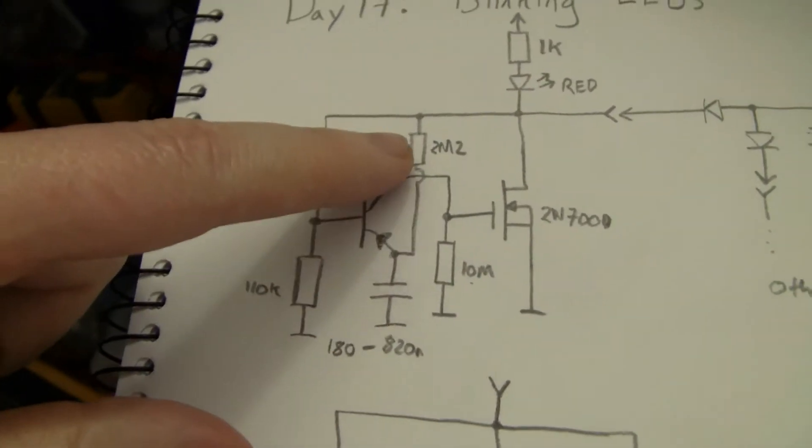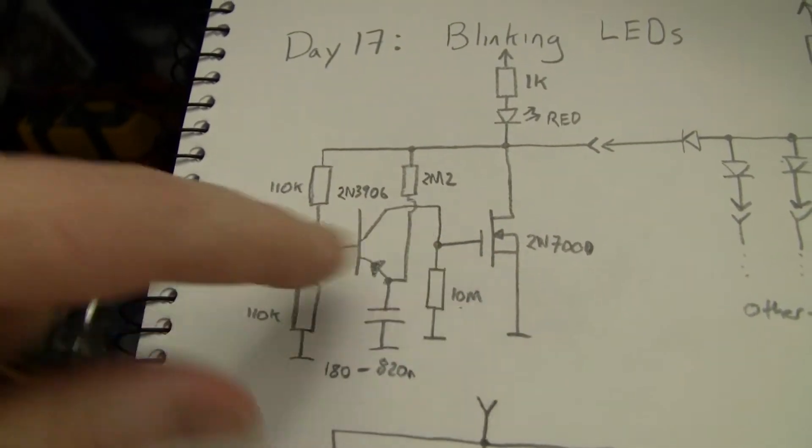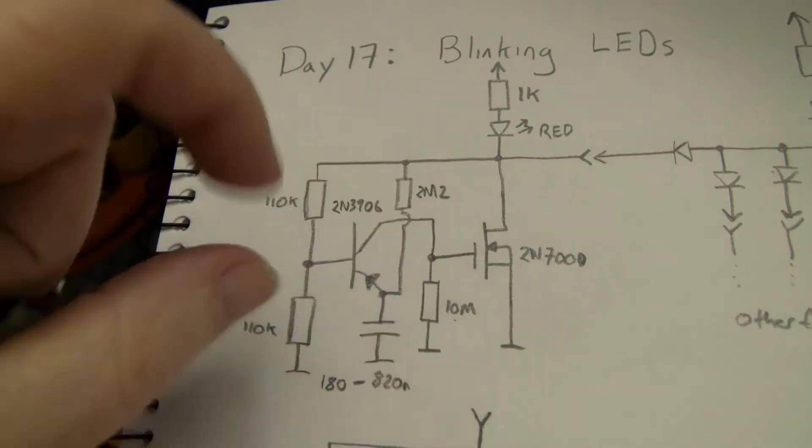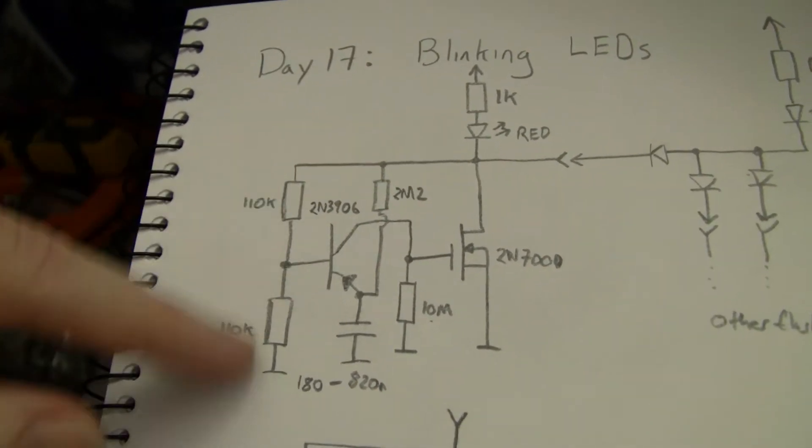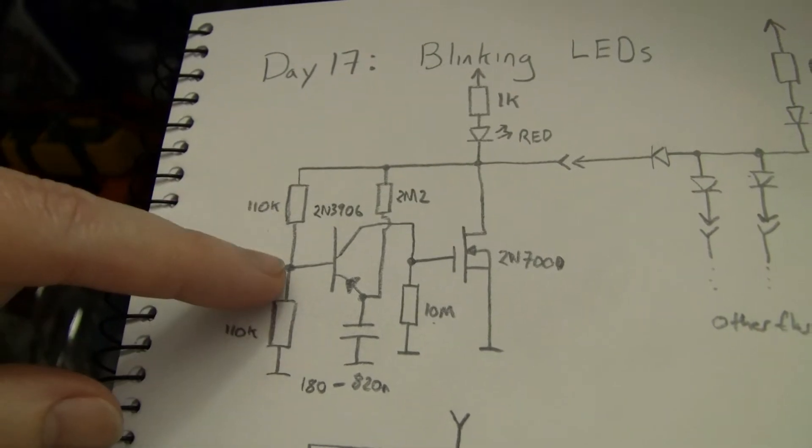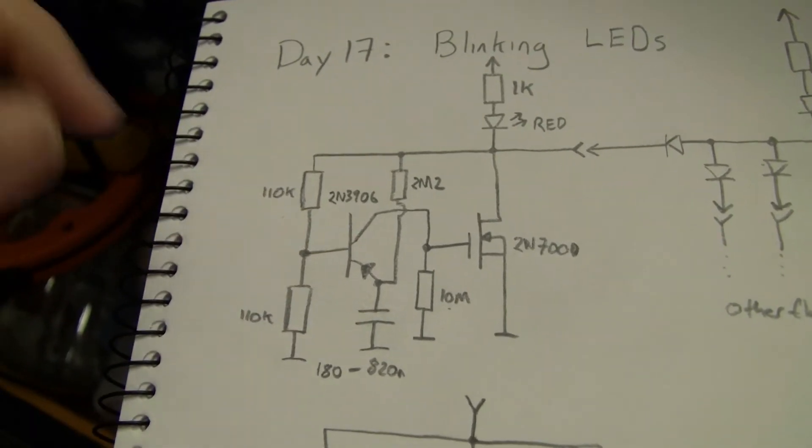You can see here I've used quite large values. Having the MOSFET enables you to use very large values, which reduces the quiescent current while the thing's charging up, although the actual voltage divider here for setting the base bias on the PNP is taking most of the current.